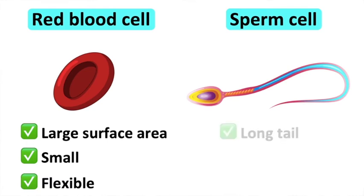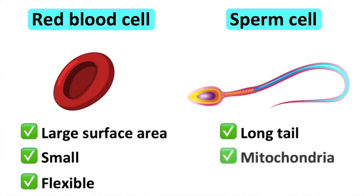Sperm cells have a tail which allows them to swim towards the egg cell. And it contains many mitochondria to supply ATP for energy. The head of a sperm cell also contains enzymes. These enzymes are released to help break through the outer membrane of egg cells.